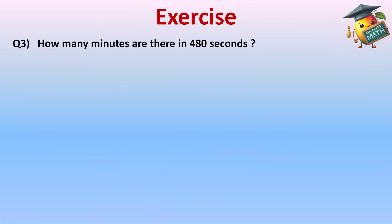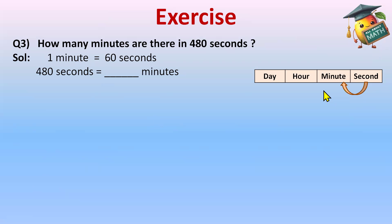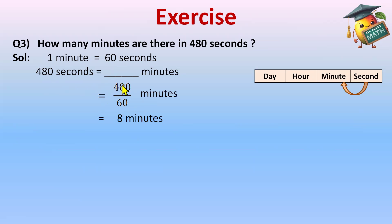Question 3: How many minutes are there in 480 seconds? The conversion is between seconds and minutes; one minute equals 60 seconds. Using the mnemonic table — Day, Hour, Minute, Second — going from seconds to minutes is moving backward, right to left. So we divide: 480 divided by 60 equals 8 minutes. Therefore, 480 seconds equals 8 minutes.